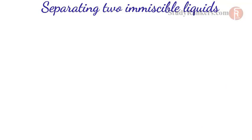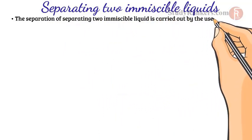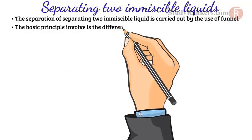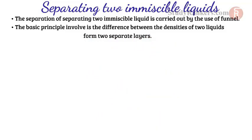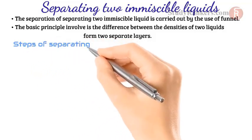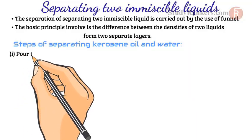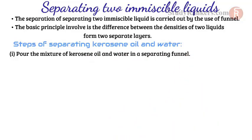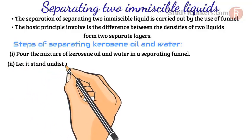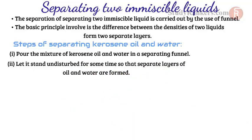Next, we will use a separating funnel to separate a mixture. The separating funnel is used for the separation of two immiscible liquids. The basic principle involved is the difference in densities of the two liquids, which causes them to form two separate layers. We will understand this by separating kerosene oil and water. First, the mixture of kerosene oil and water is poured into the separating funnel, then left undisturbed so that separate layers of oil and water are formed.